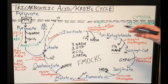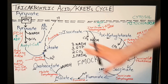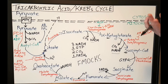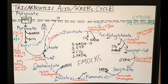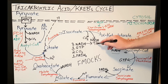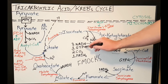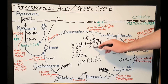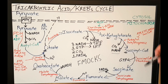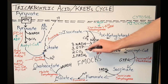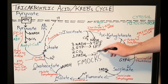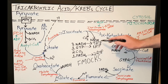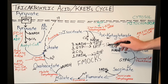How much ATP do you get from one turn of the Krebs cycle? Some textbooks say you get three ATP per NADH, giving you nine ATP. GTP gives you one ATP via the enzyme nucleoside diphosphokinase. FADH2 gives you two ATP. This totals up to 12 ATP per cycle.